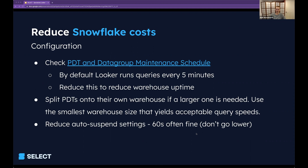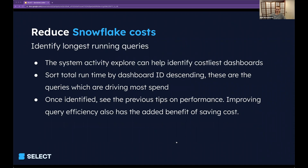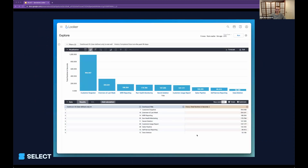Where possible, split PDTs that require a larger warehouse onto their own warehouse — separate from all the live queries running in your account. You can do that under the Looker Snowflake connection. I believe you can only set a single warehouse across all PDTs and all views, which is a bit restrictive, but worth bearing in mind. The general goal is to run queries on the smallest possible warehouse that they run acceptably quickly on. Once we've sorted out all this configuration, the next thing to look at is long-running queries. The System Activity Explorer can be helpful here — it will show you total runtime by dashboard, which you can use to rank the slowest dashboards in your account. These are the dashboards worth optimizing because people are waiting for them to load, and they're also the ones driving the most spend.